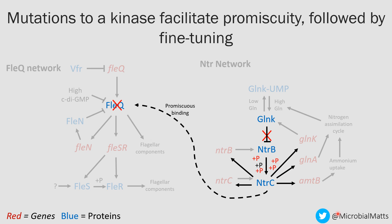This does carry a fitness cost, however, as nitrogen assimilation is overexpressed, which is damaging. The second step mutation we see refines this, and it occurs in the DNA binding domain of NTRC. It switches the protein's binding specificity to focus on strongly expressing the flagellum genes, and also mitigates the fitness cost associated with nitrogen assimilation overexpression by reducing the expression of those components.